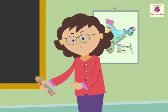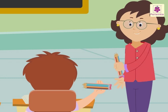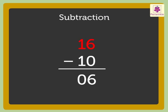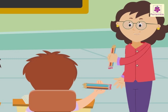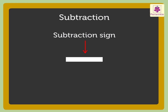I have 16 pencils. I give 10 pencils to Sam. How many pencils are left with me? I will have to subtract 10 from 16 to find the number of pencils left with me. 6 minus 0 is equal to 6, and 1 minus 1 is equal to 0. Thus, the difference between 16 and 10 is 6. There are 6 pencils left with me. We use the subtraction sign to write the subtraction sentence.